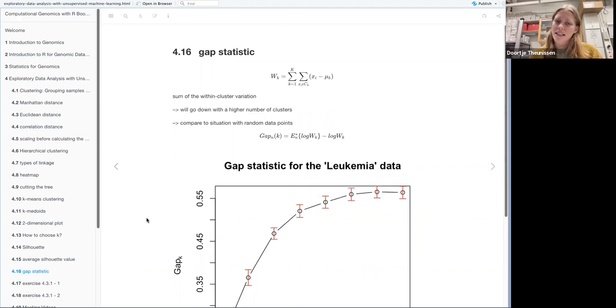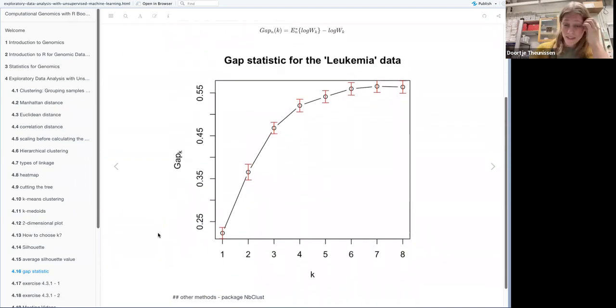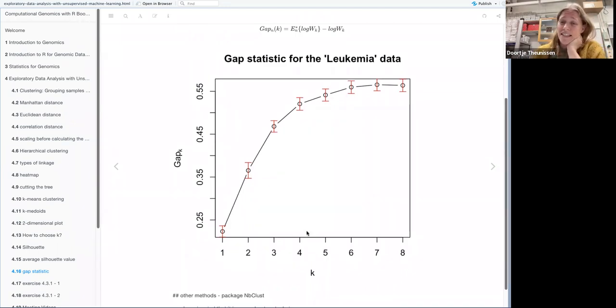And then another way to calculate k is the gap statistic which looks at the sum of within cluster variation. So you can calculate that, the problem here is that the sum of the within cluster variation only goes down if you have more clusters because each point will be closer to the other points in clusters when it gets smaller. So instead of just looking at that one they compare it to a situation where each of the points are just randomly spread and then look at the difference between the two. And that is the gap statistic. And then when we look at the plot they say that seven clusters have the highest value but there is a rule that if your highest value is not bigger than the value of the previous one plus the error of measurements then you keep the previous one so in this case they would go for six clusters.